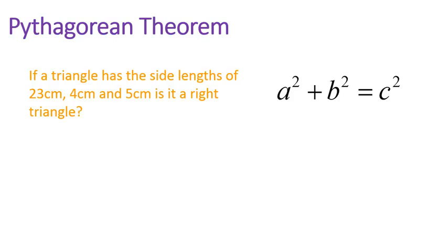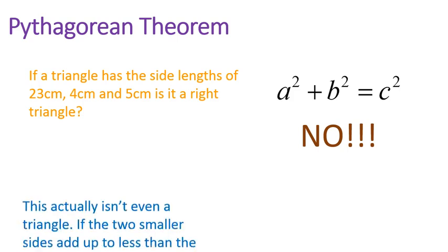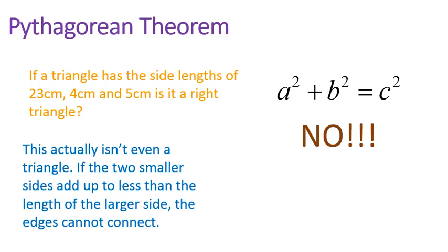If a triangle has a side length of 23 centimeters, 4 centimeters, and 5 centimeters, is it a right-angled triangle? Now, this is a special situation where we don't have to do any math at all. Can you think about why we wouldn't need to do math on this one?